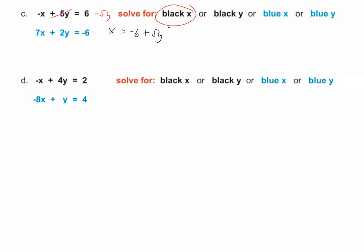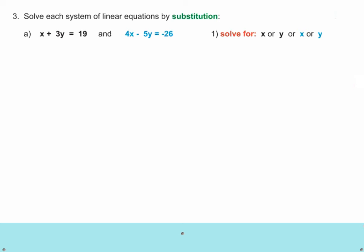And therefore then, of course, for D, the obvious choice is blue Y. Right? Blue Y is easier because it's positive and the X is negative. That's how you got to start if you're going to solve by substitution. That's got to be your starting point. Okay. Now, let's look at the full-fledged operation. Solve each system of linear equations by substitution. Okay.